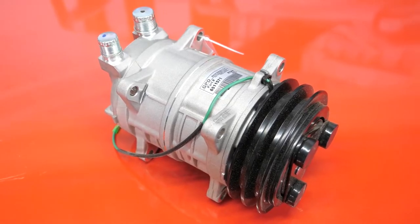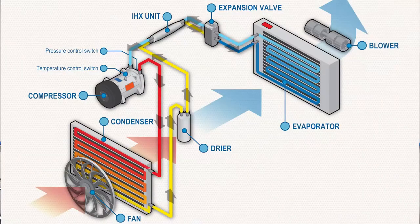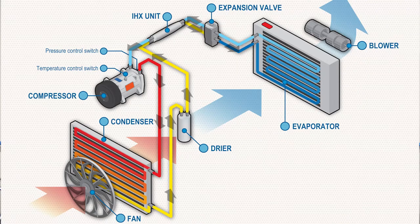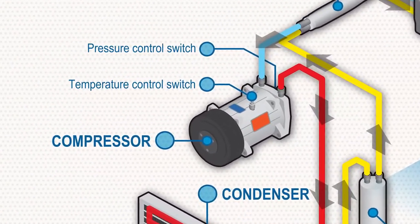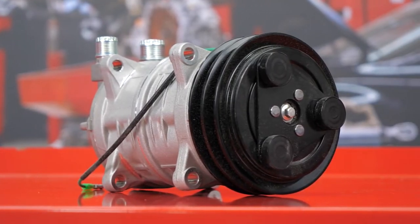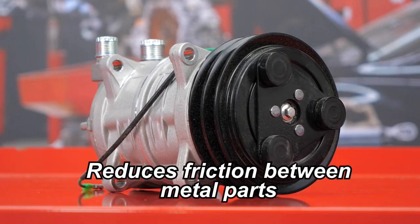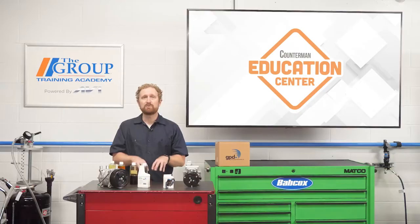It's also important for the entire system to be free of acids, contaminants, and sludge, because they can cause a number of problems. In older systems, refrigerant-charged oil circulates through the AC system. Although the system maintains a certain percentage of oil in the compressor at all times, this lubrication performs two important functions: it reduces friction between metal parts, which keeps heat in check, and it minimizes wear from metal particles that could cause premature compressor failure and clog condenser passages.